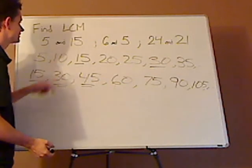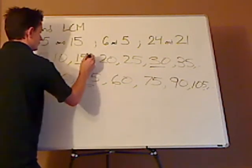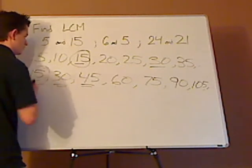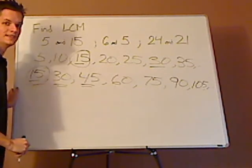So you want to pick the least common one, and the least common one would be 15. Now, the quick way is this.